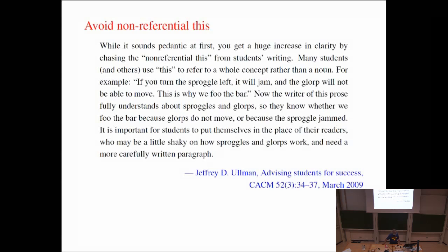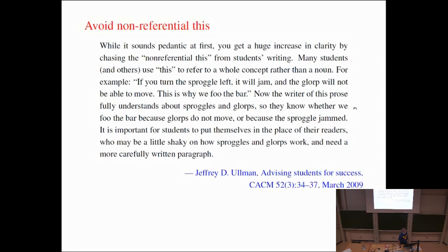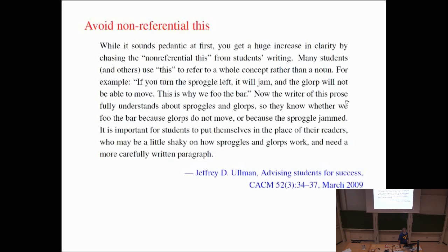Notice that the word 'this' does appear in that text — 'this prose' — where it refers to that particular thing treated as a single object, making it completely clear. Very often when I use the word 'this,' I refuse to use it unless it's immediately followed by a noun that makes it clear exactly what object I'm referring to. Very simple thing to do but it makes your writing a lot clearer.